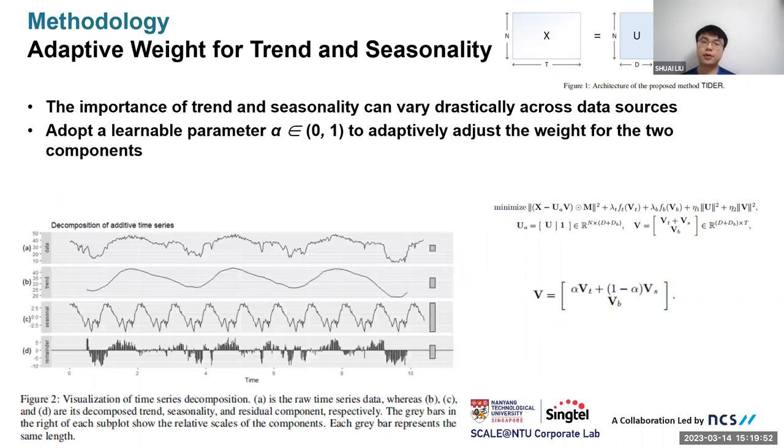The next part is adaptive weight for trend and seasonality. As we can see in the left picture, the scale of trend and seasonality in time series is not always the same. The importance of trend and seasonality can vary a lot across different time series data. Thus, if we merely use a one-to-one proportion to model trend and seasonality, the results might sway away from reality. We adopt a learnable parameter alpha to adaptively adjust the weight for these two components. Given this, the objective equation can be changed. The only difference is how to concatenate Vt and Vs.